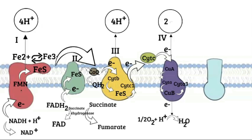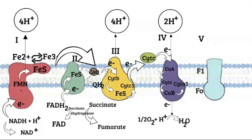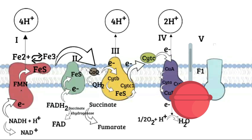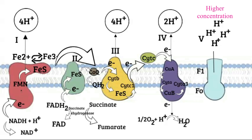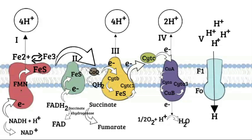Complex V, or ATP synthase, is a protein assembly in the inner mitochondrial membrane. It is a multi-subunit transmembrane protein with two functional units: F1 and F0. It looks like a lollipop, since the membrane-embedded F0 component and F1 are connected by a protein stalk. All the pumping of hydrogen ions into the intermembrane space creates a higher concentration of protons there compared to the matrix. ATP synthase uses this flow of hydrogen ions from higher to lower concentration to generate energy, converting ADP to ATP. This is oxidative phosphorylation.